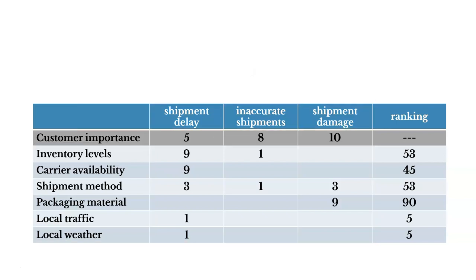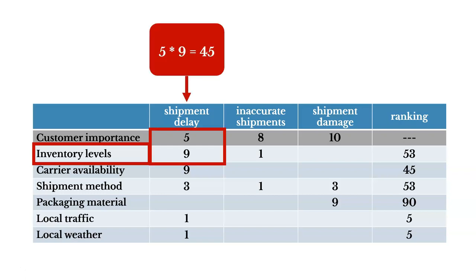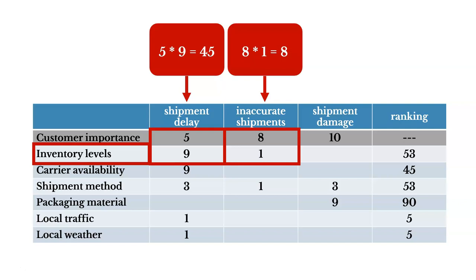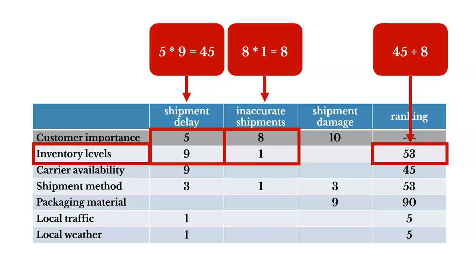To calculate our rankings, we'll use inventory levels as an example. We take the customer importance score and multiply it by the impact score. In the first case, 5 times 9 gives us 45. For inaccurate shipments and inventory levels, 8 times 1 equals 8. There's no real relationship between inventory levels and shipment damage, so we skip that. To get our ranking, we take that 45 and add 8 to it. As we calculate these rankings, it helps us determine which inputs we ought to focus on — which are key contributors to problems that are critical to our customers.